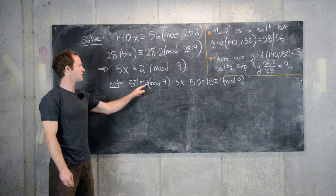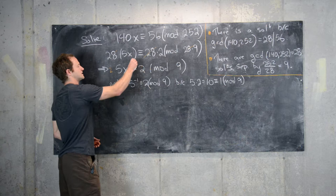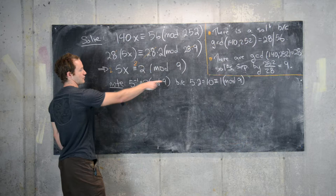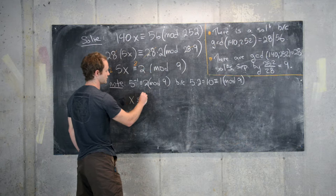So what we'll do is take this linear congruence and multiply both sides of it by 2. And so 2 times 5 is 10, which we already said that was 1. And that gives us x is congruent to 2 times 2, which is 4 mod 9.